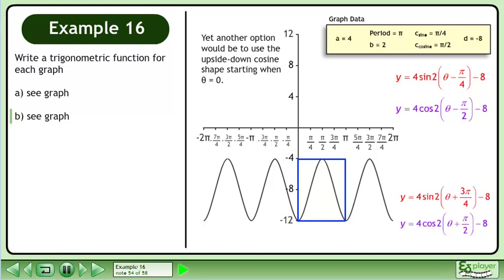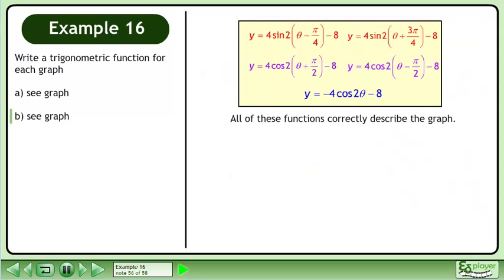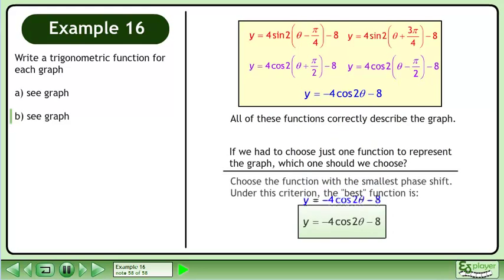Yet another option would be to use the upside-down cosine shape starting when theta equals 0. This function is y equals negative 4 cos(2theta) minus 8. All of these functions correctly describe the graph. If we had to choose just one function to represent the graph, which one should we choose? Choose the function with the smallest phase shift. Under this criteria, the best function is y equals negative 4 cos(2theta) minus 8, since it has a phase shift of 0.